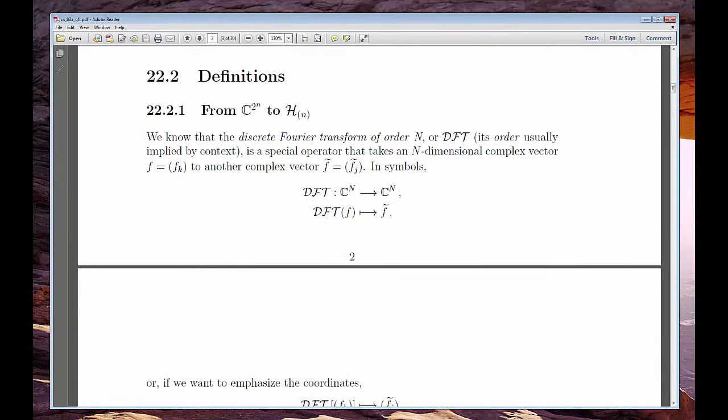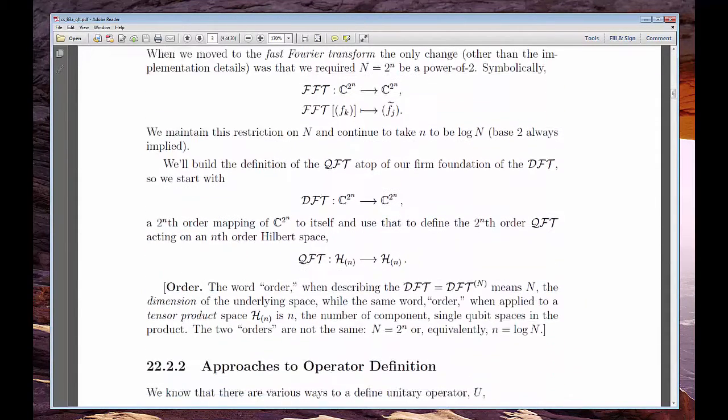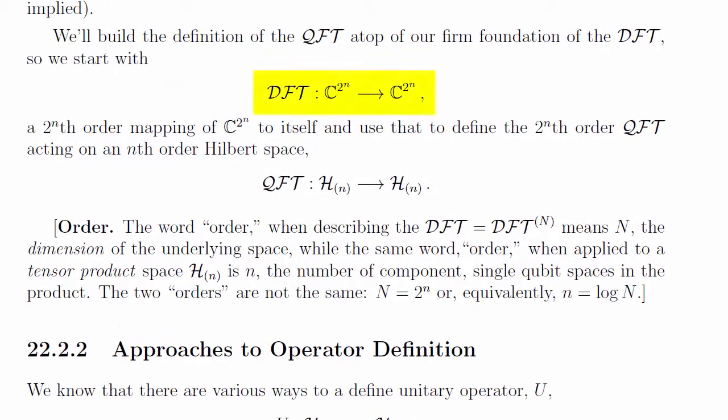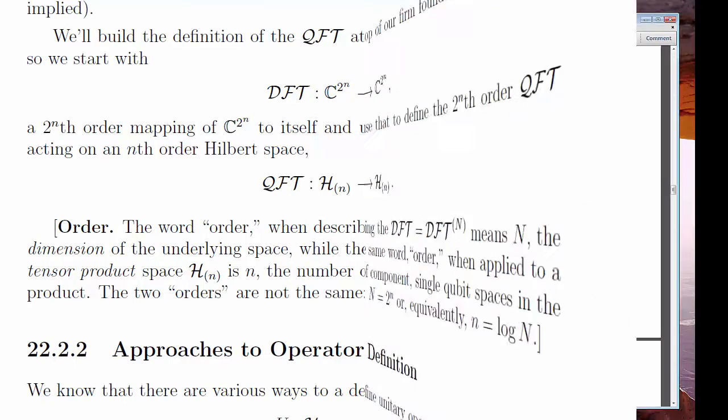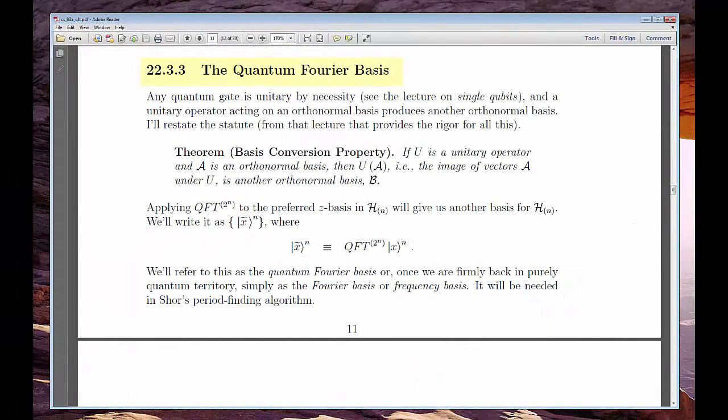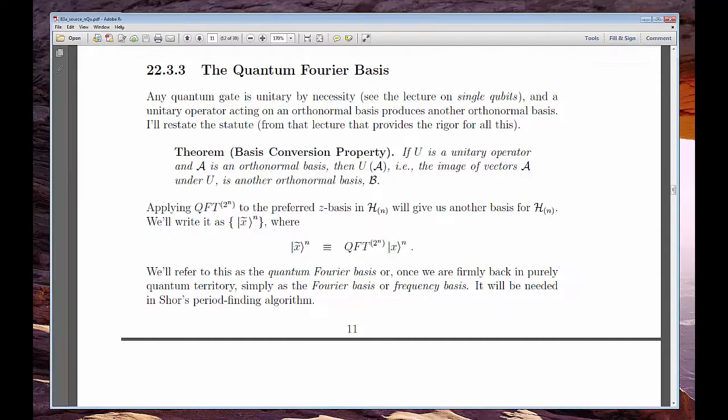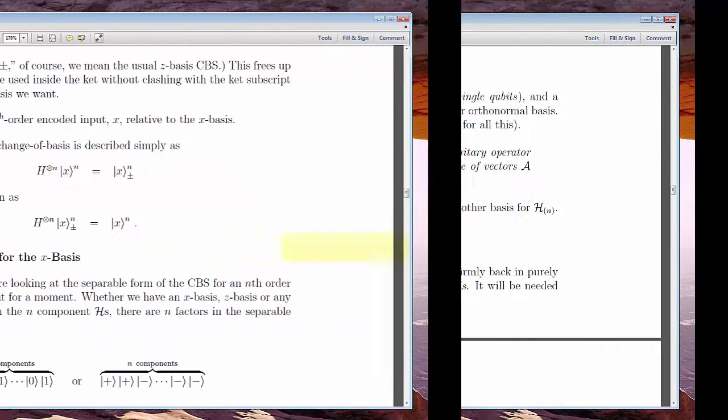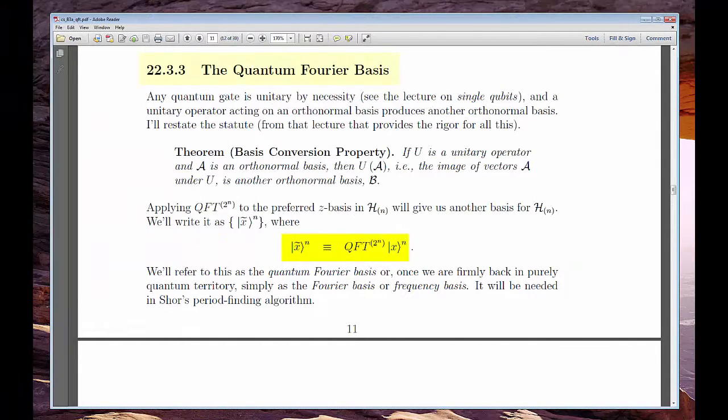First, think of the QFT as just another unitary operator on a Hilbert space. I'll define it three equivalent ways, and you'll be able to choose any of those as your personal favorite. Second, consider the QFT as a basis transforming operator. Every unitary transformation converts the Z basis to another orthonormal basis. For the Hadamard operator, that other basis was the X basis. For the QFT, we get something called the Fourier or frequency basis.